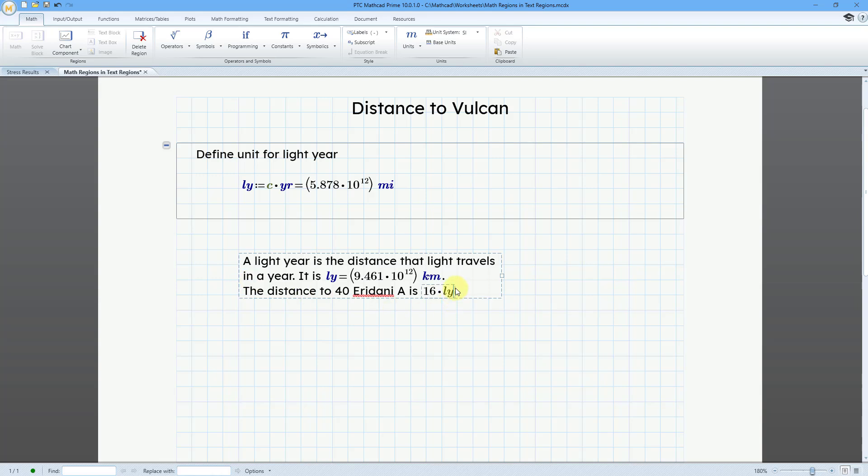Let me click outside and hit the period for additional text and then click outside. And in that way, I have created two math regions inside of a text region.